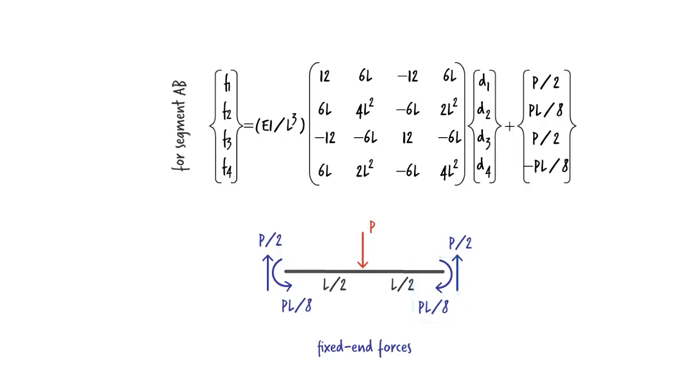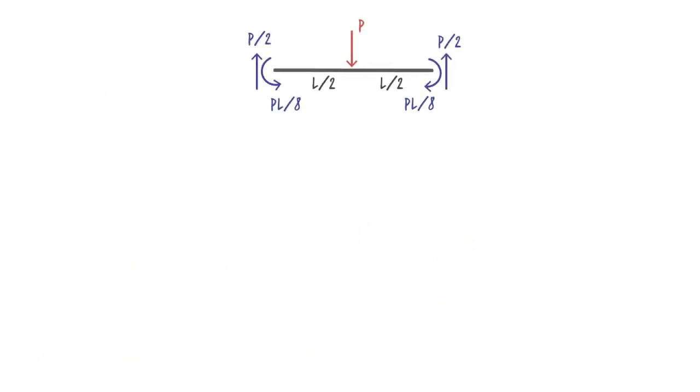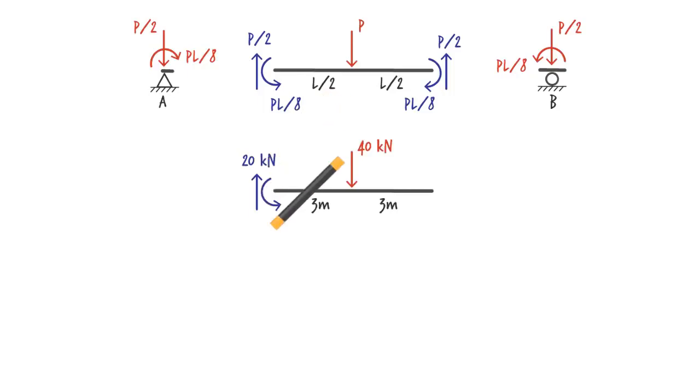We now need to transfer these fixed end forces to the adjacent joints and treat them as equivalent joint loads for P. To do this, we simply reverse the direction of each force and place it at its nearest joint, like this. In the case of our beam segment, since P equals 40 newtons and L equals 6 meters, we get...